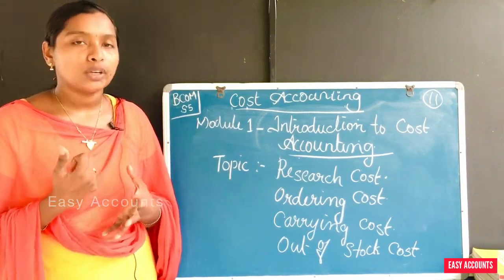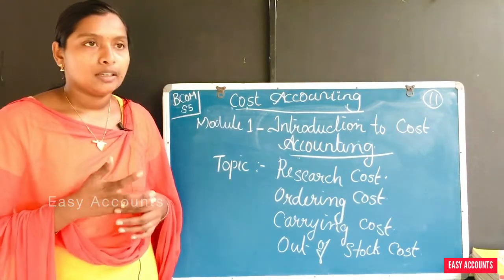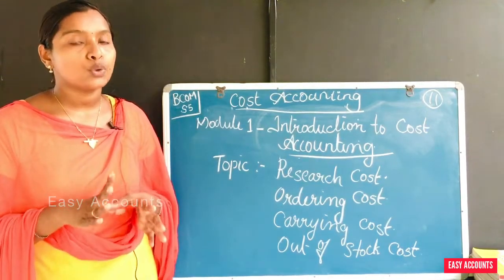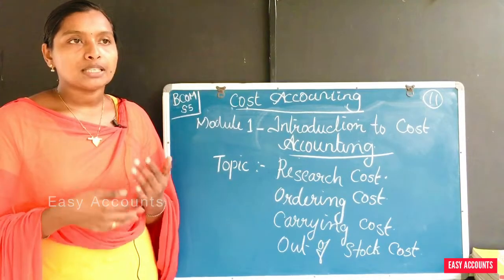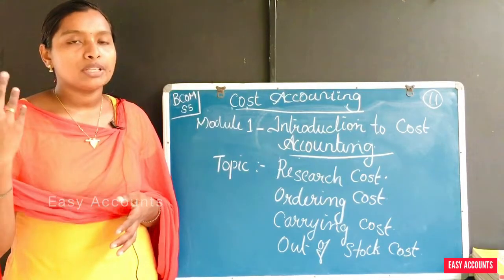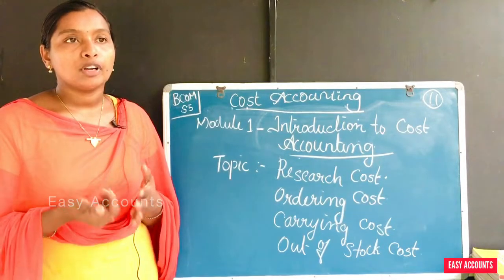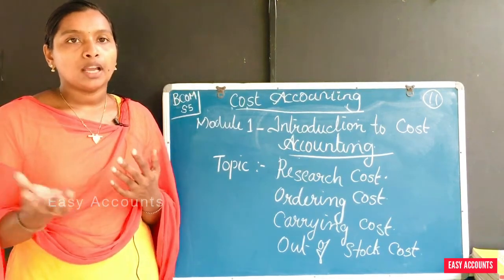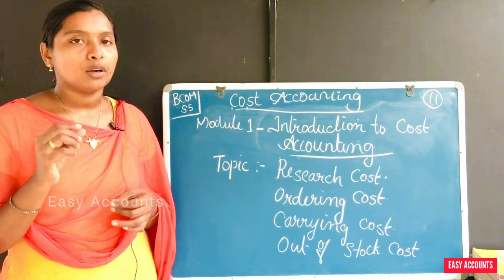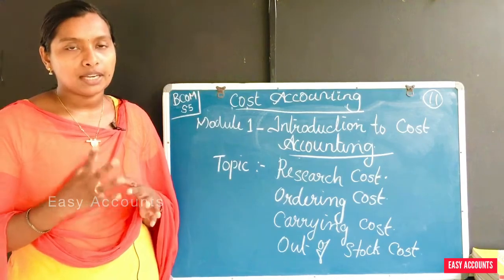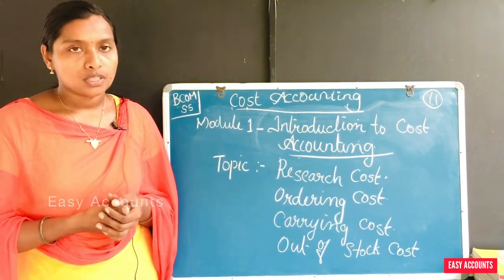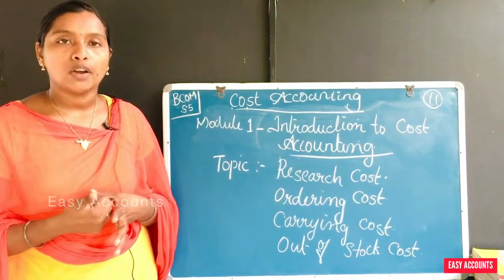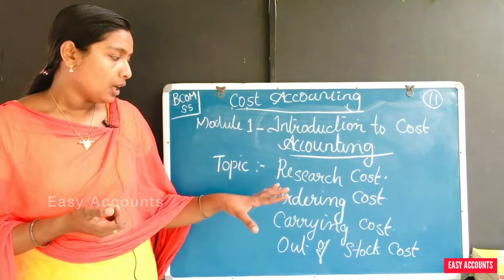When we have a shortage of stock, we have a shortage of sales. Customers don't have any stock available. They are not satisfied, and it is not good for goodwill. The customer doesn't have any satisfaction. This is the out-of-stock cost.